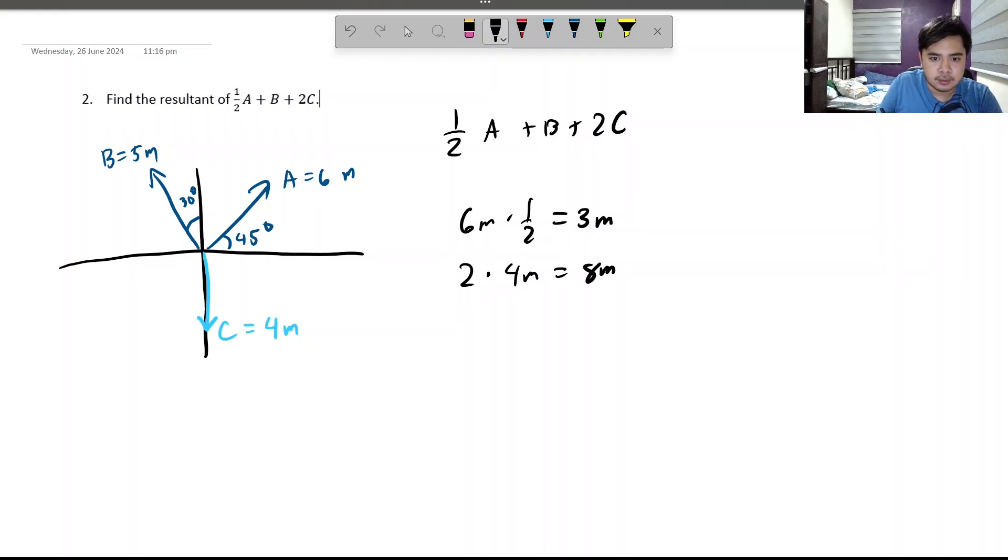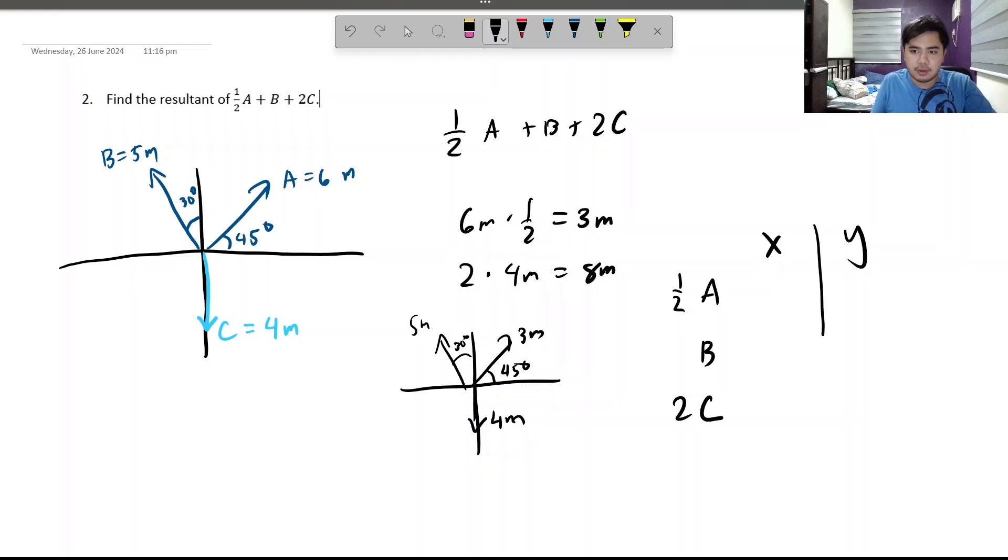So, the 3 vectors that we do need is, let's draw another one. 9 meters, which is 45 degrees, 5 meters, and 30 degrees, as well as 8 meters going south. So, a trick here is to do the XY table. Well, 1.5A and B and 2C. There we go. So, we just need to find the X coordinates of the vector and the Y coordinates of the vector as well. How are we going to do that?